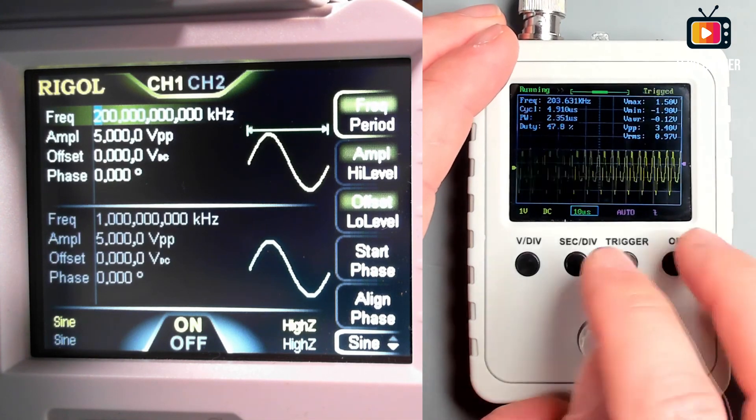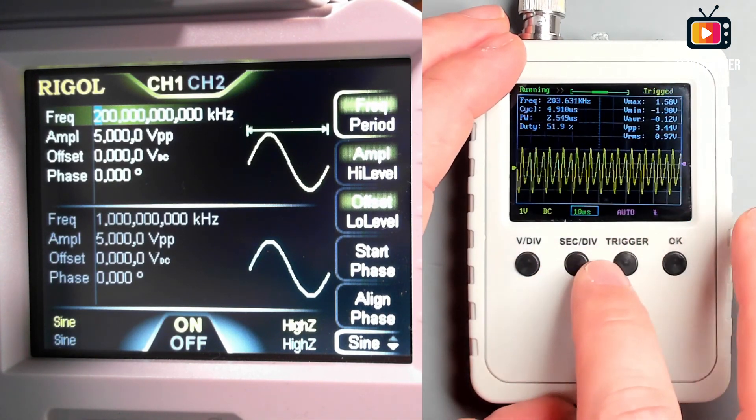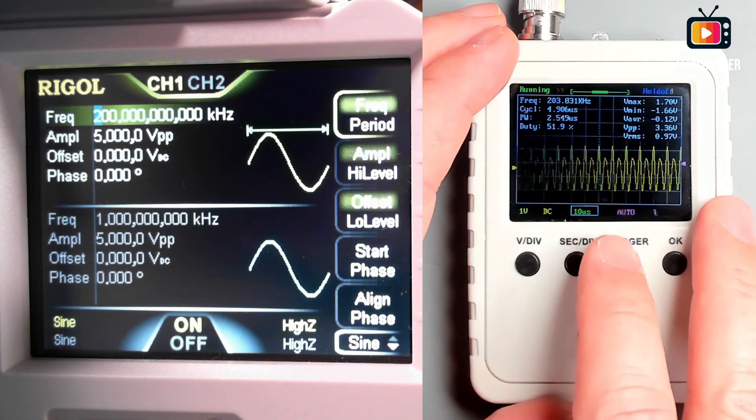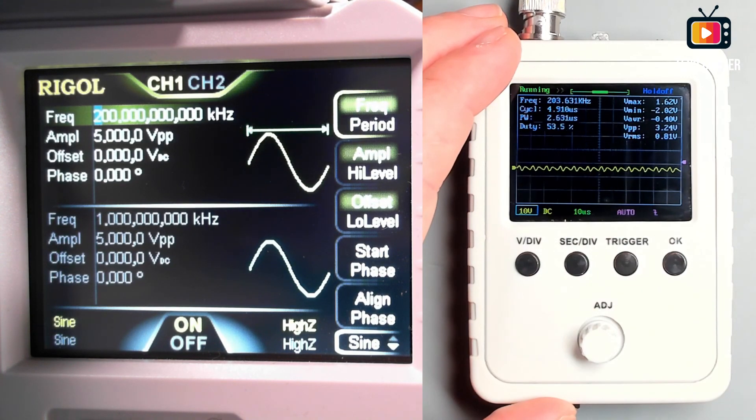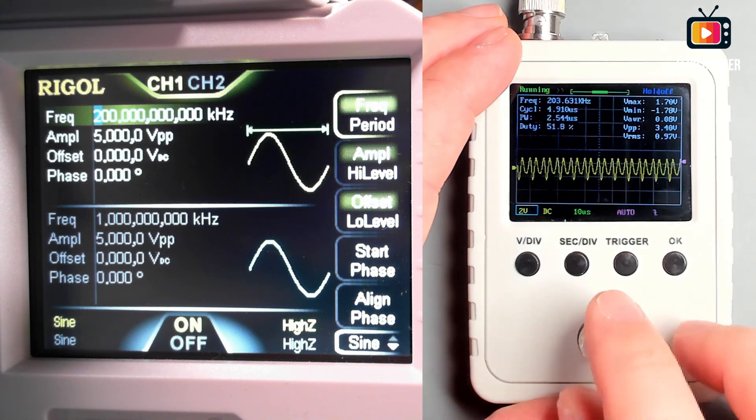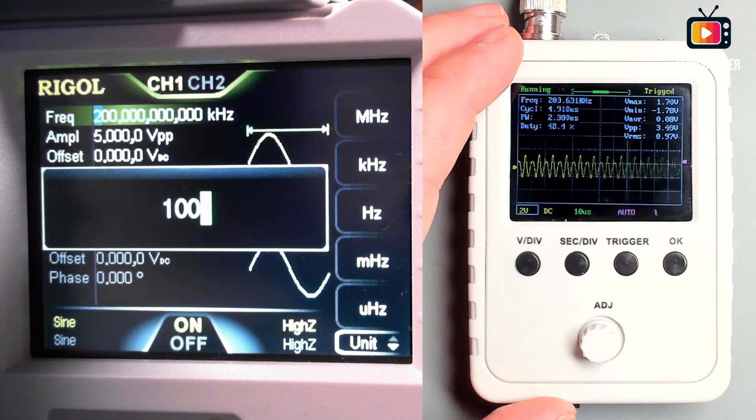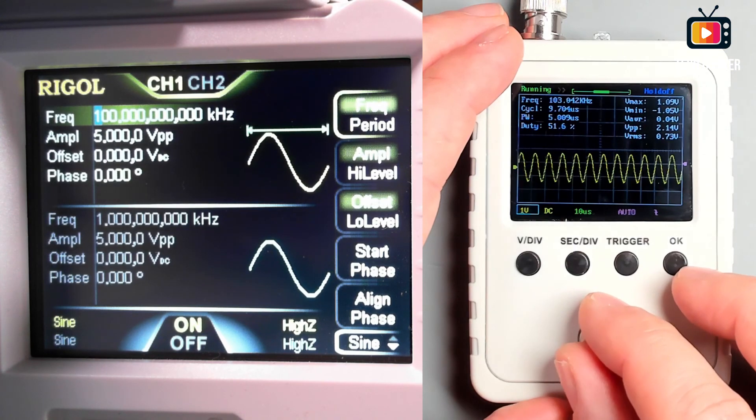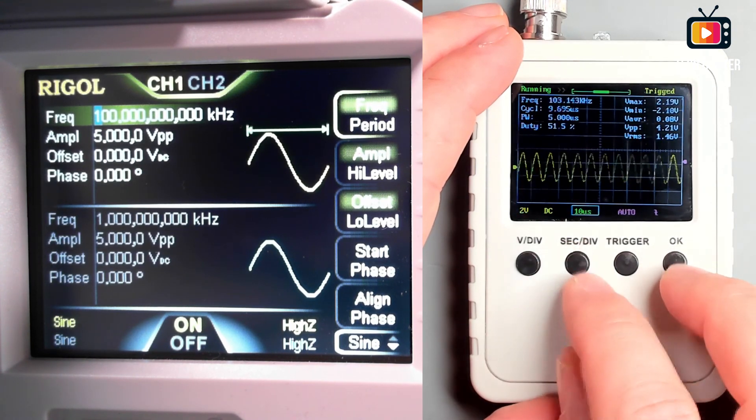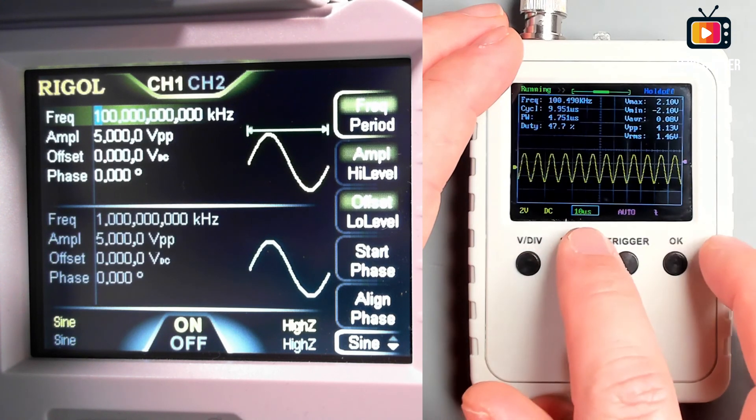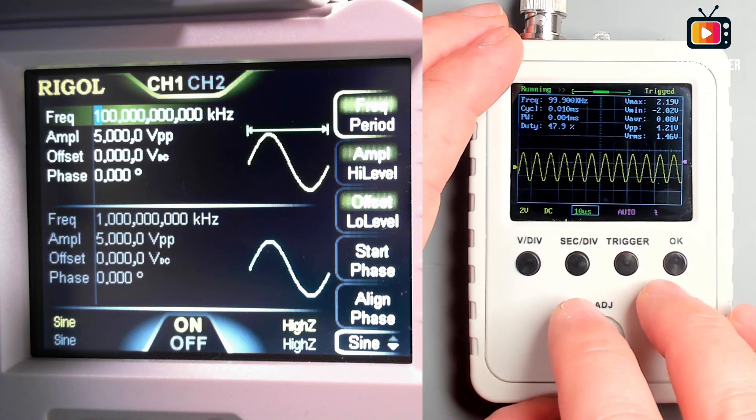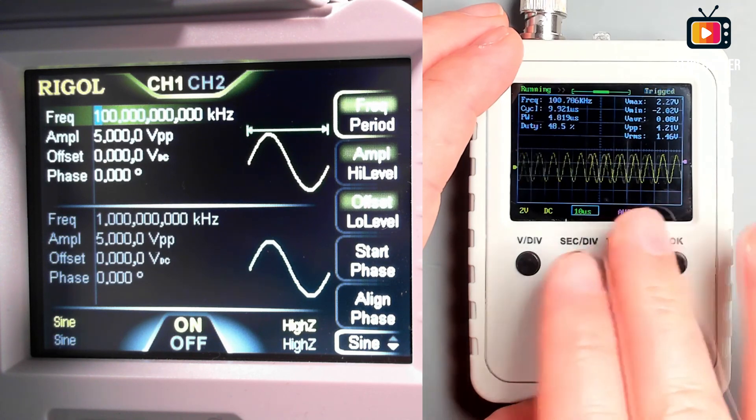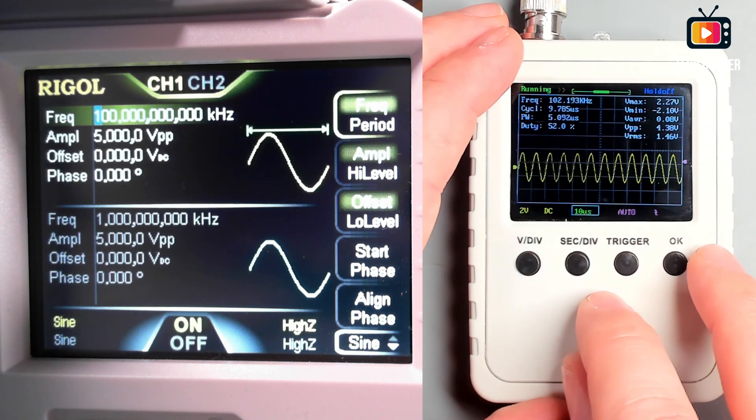But what they say is that we should have an oscilloscope that has at least the double bandwidth of the signal generated by the function generator. So I'm kind of stretching things out here. Let's try 100kHz, and with all of the signal, we have a decent sine wave at 10 nanoseconds. I think it will handle it. We should not forget that we have here a $20 oscilloscope.